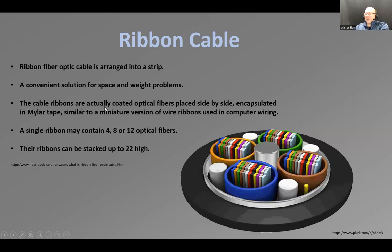The cable ribbons are coated optical fibers placed side by side and encapsulated by Mylar tape — a thin layer around them, similar to a miniature version of ribbon cables in computer wiring. A single ribbon might contain 4, 8, or 12 optical fibers depending on type. The ribbons can be stacked up to 22 high — that's a lot of capacity.